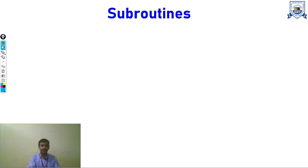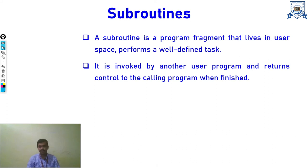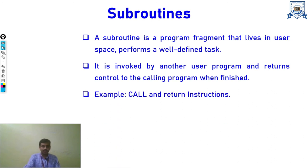Subroutines are a part of a program that lives in user space and has a well-defined task. They are invoked by another user program. When invoked, a subroutine takes control of the program, and when its instructions are finished, it returns control to the calling program and normal execution resumes. Examples of subroutines are call and return functions — a function executes, returns a value to the calling program, and normal execution continues.